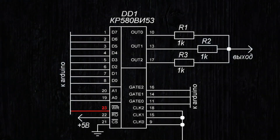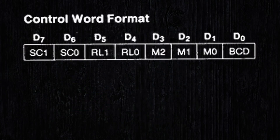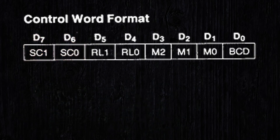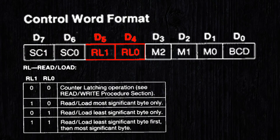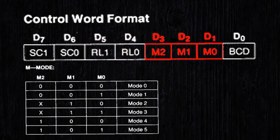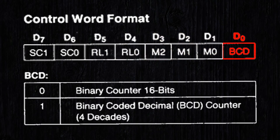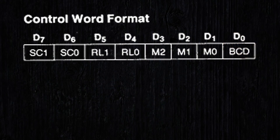For configuration, set a high level on lines A0 and A1, after which you need to set the required data on the D lines. D7 and D6 are the most significant bits — the channel number. Set D5 and D4 to 1; in this case, the microchip will expect 16 bits of data, first the lower byte, then the upper byte. D3, D2, and D1 are for mode selection. We are interested in mode 3, so D1 and D2 are set to high level. D0 is for selecting binary or binary-coded decimal — for greater accuracy, it's better to use binary code.